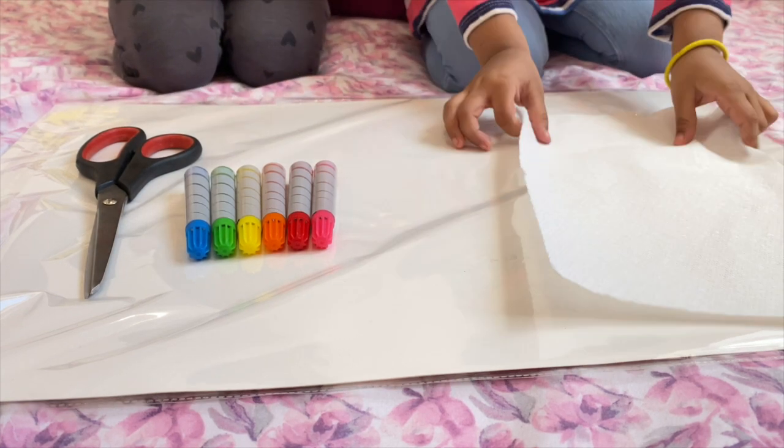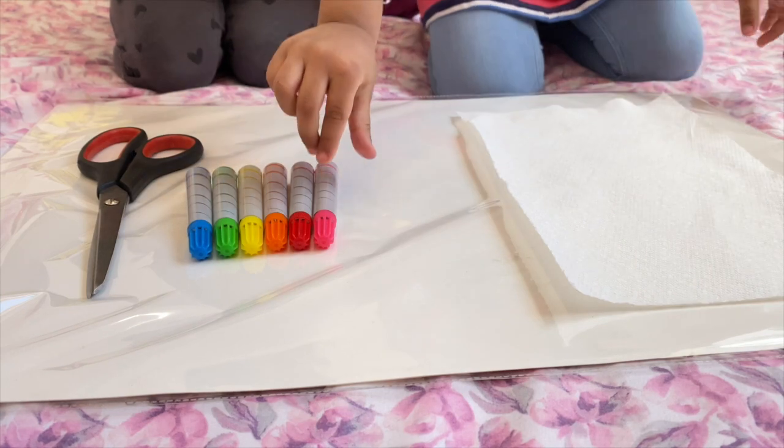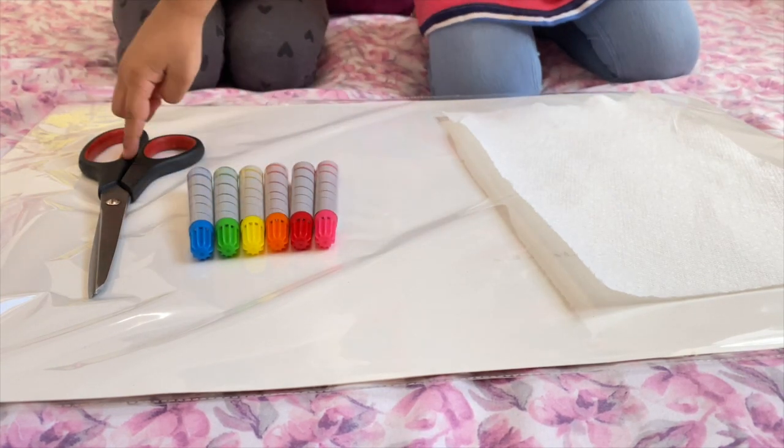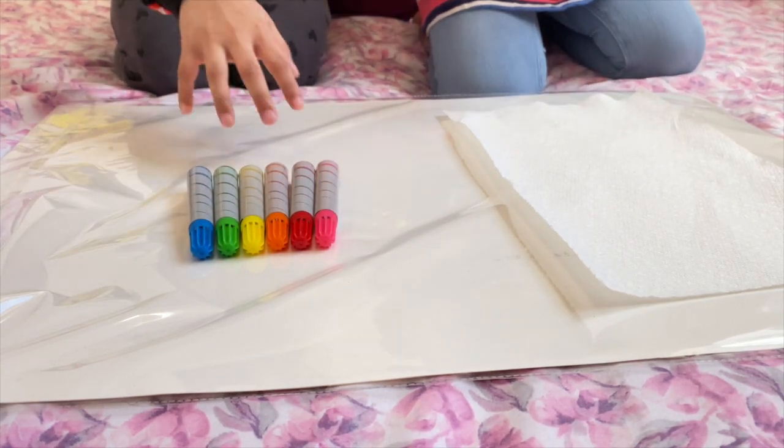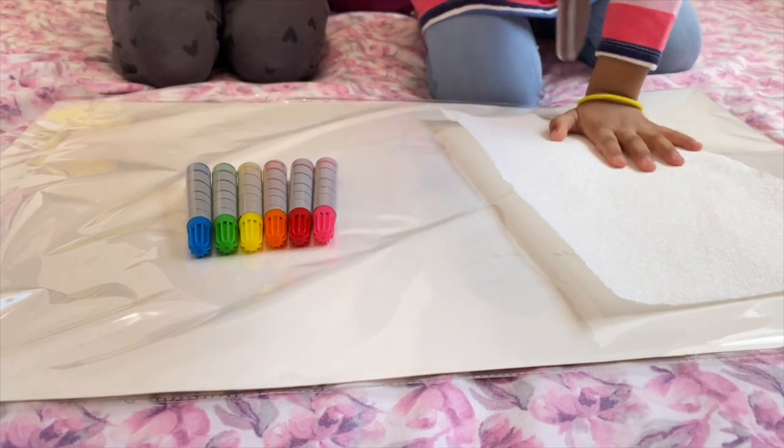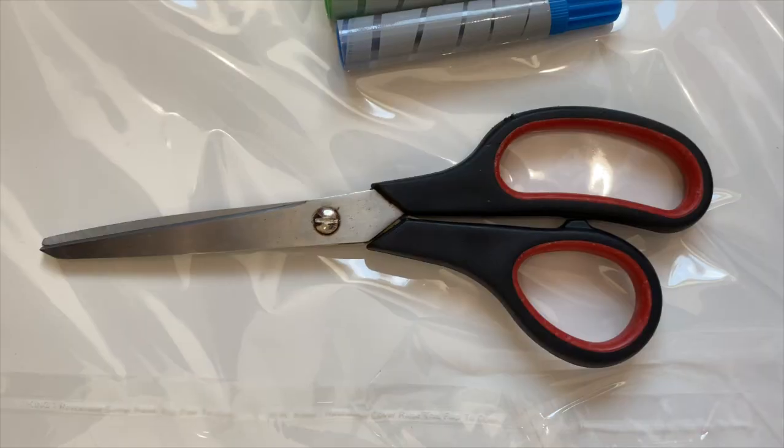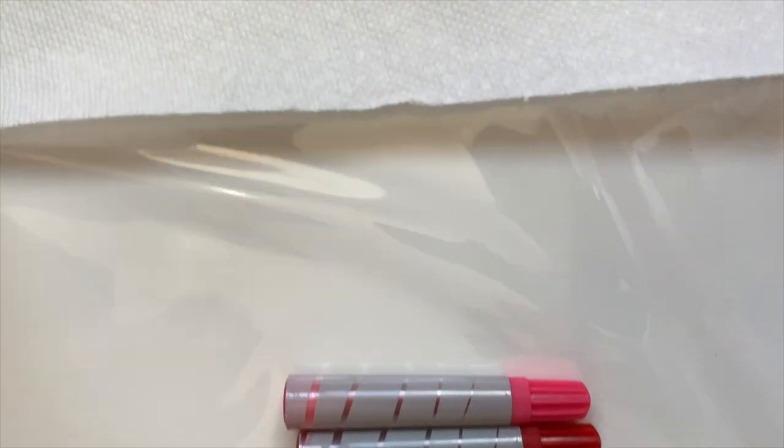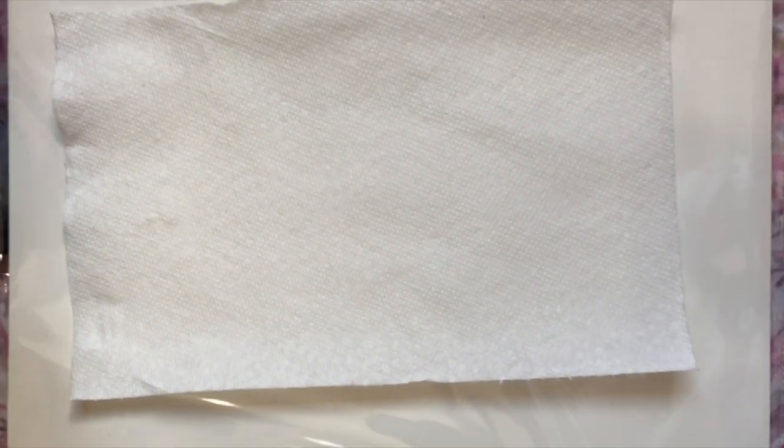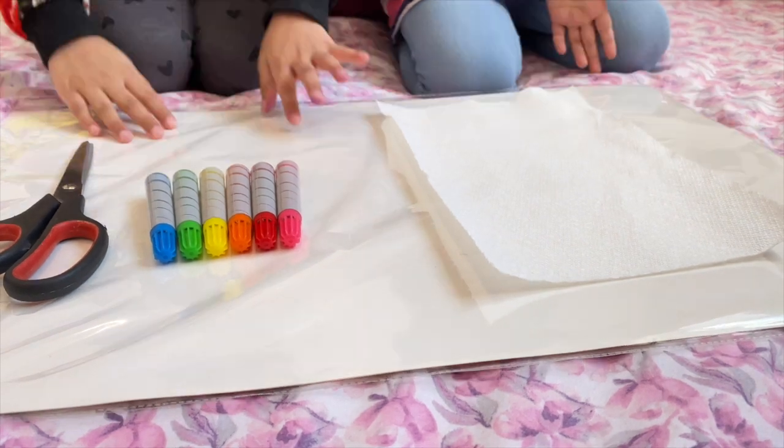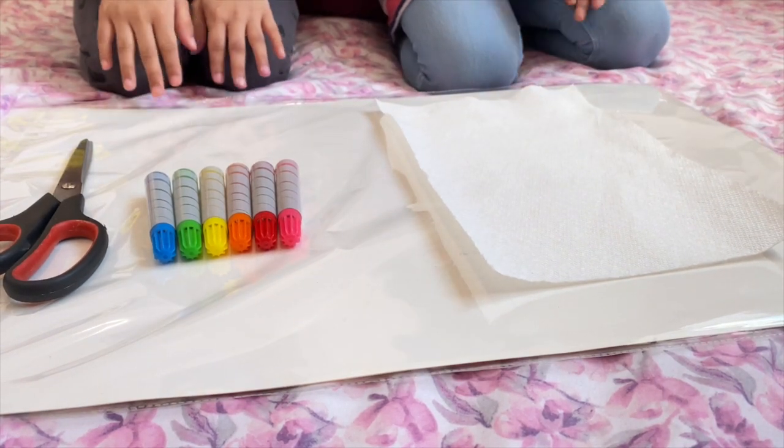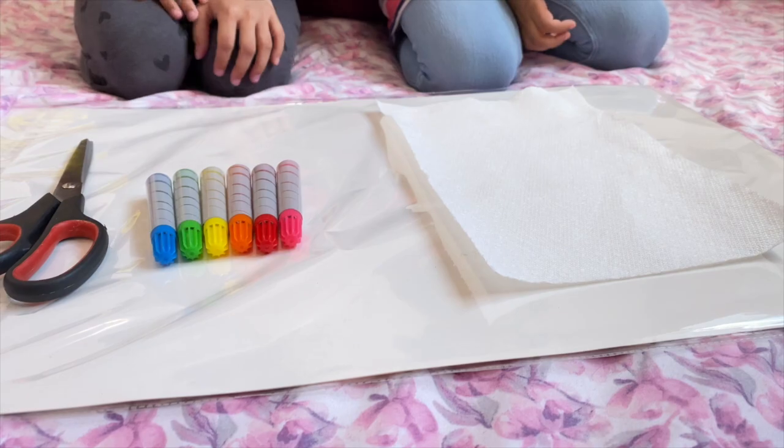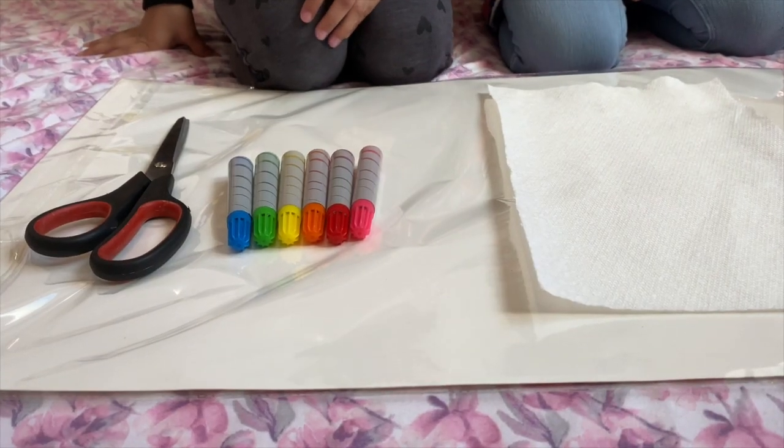The things you will need is a paper towel sheet, some markers. You can choose any color you want, and we picked needles. And you can pick scissors if you want. And we just need this, so our surface doesn't get dirty when we're coloring. So let's get started.